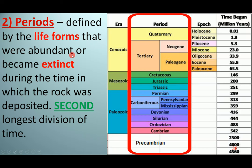Periods are defined by the life forms that were abundant and eventually became extinct during that time, as recorded in the rock and fossil record. We have periods including the Quaternary, Tertiary, Cretaceous, Jurassic, Permian, Devonian, Silurian, Ordovician, and Cambrian. Once life forms like the dinosaurs became extinct, a new period started.